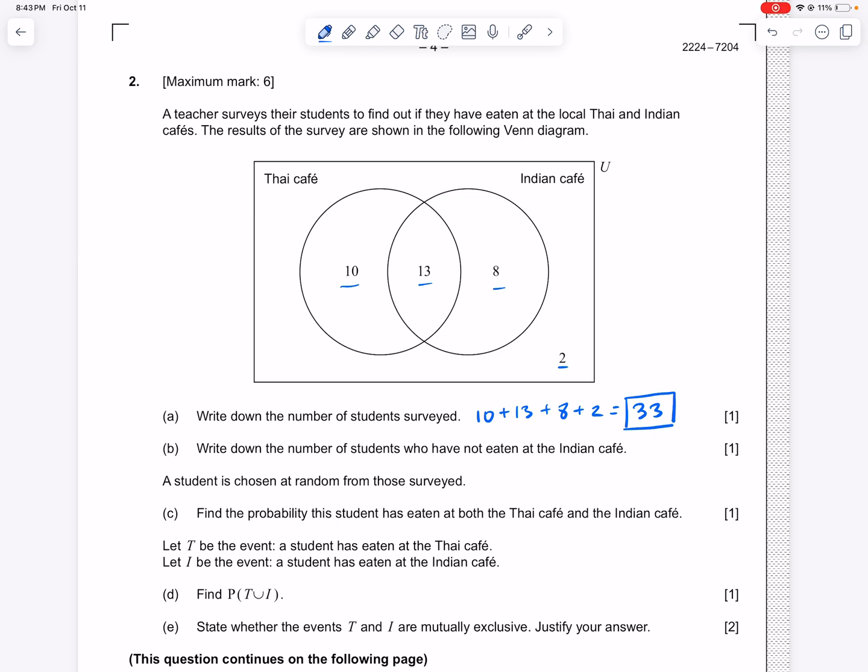So now the next question is saying write down the number of students who have not eaten at the Indian Café. So not eaten at the Indian Café. So if we look at the Indian Café.